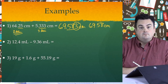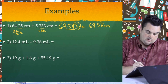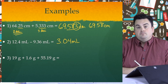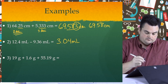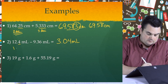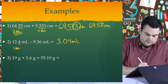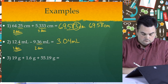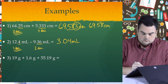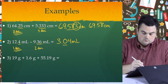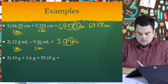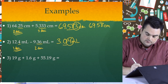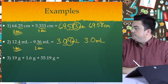Example two: 12.4 milliliters minus 9.36 milliliters. Unrounded answer: 3.04 milliliters. The first measurement has one decimal place, the second has two. We go with the lower number — one decimal place. Underlining the zero and circling the four next door: since four is less than five, we drop it and keep the zero. Final answer: 3.0 milliliters.